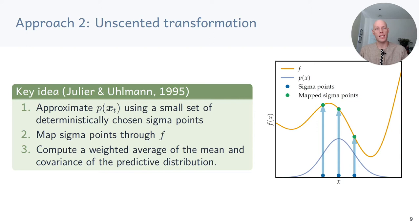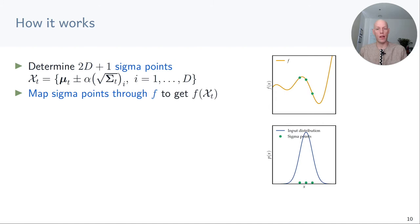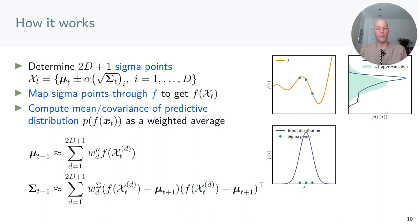The second deterministic approximate inference approach is the unscented transformation. Instead of linearizing the transition function, we represent the input distribution using a deterministically chosen set of so-called sigma points. We then map these sigma points through the function and use them to compute a weighted average of the mean and covariance of the predictive distribution. Assuming our state lives in a d-dimensional space, we choose 2d plus 1 sigma points: mu_t is the mean of the input distribution, the square root of sigma is the square root of the covariance matrix, and alpha is a scaling factor that spreads the sigma points symmetrically around the mean. We then map them through the original function f and compute the mean and covariance as weighted averages, with weights 1 over 2d plus 1 giving maximum likelihood estimates, though more sophisticated weighting is possible.